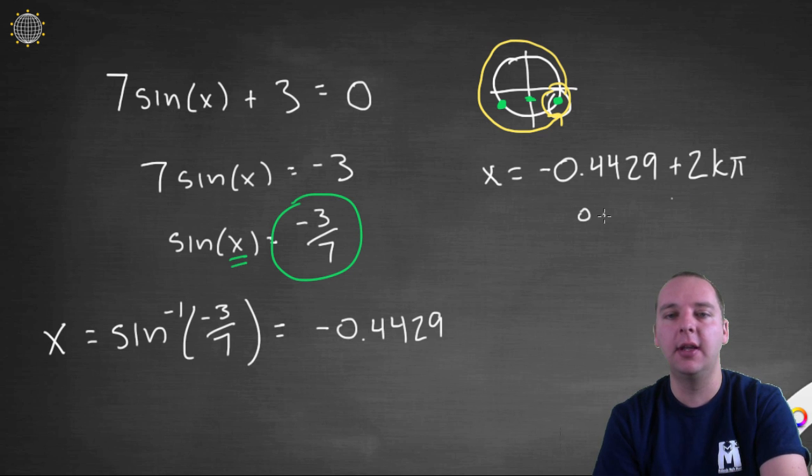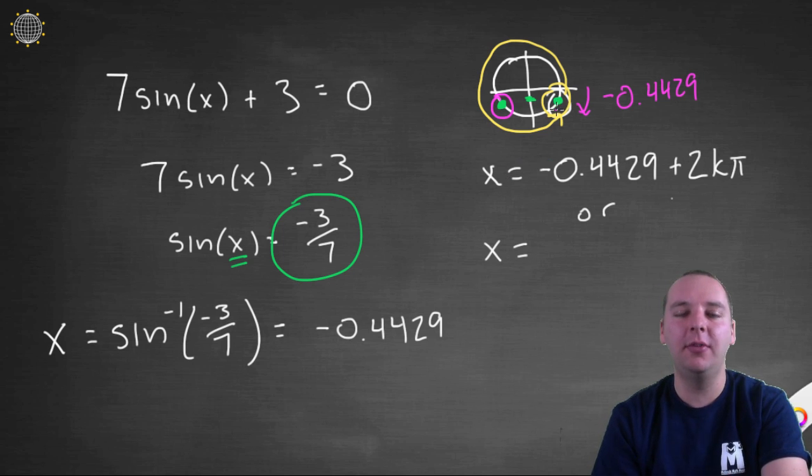Or, there's another angle here. Now, this one's going to be a little trickier to find. Or, x equals...How do we find this guy? Because all we know is negative .4429 radians below the x-axis would be this angle. Well, you have to get a little clever here.